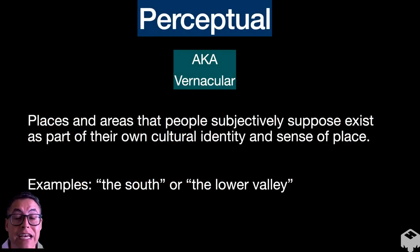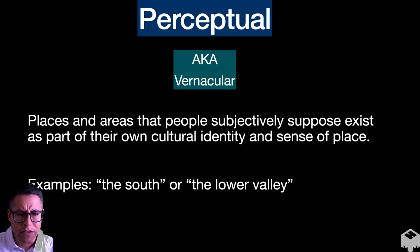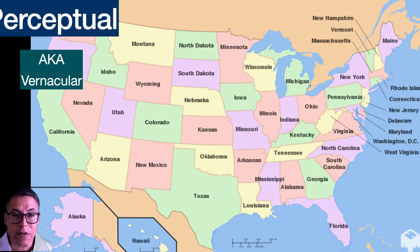Perceptual regions are the last kind of region here. And these are places and areas that people subjectively suppose they exist as part of their own cultural identity or as part of their sense of place. These are more subjective and abstract. In other words, they can mean different things for different people. So for instance, there's a south and in where we live in the city of El Paso, there's an area called the lower valley. So here's an example of what I mean.